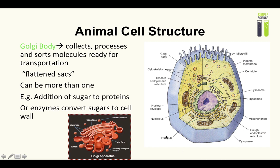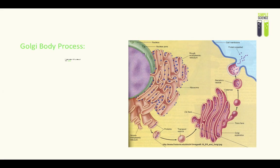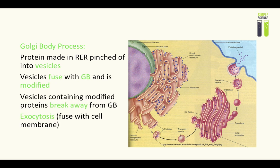Let's take a look at the four-step process. In the first step, proteins are made by the ribosomes in the rough endoplasmic reticulum and then pinched off into transport vesicles. In the second step, the vesicles containing the proteins fuse into the Golgi body, where the proteins are modified.